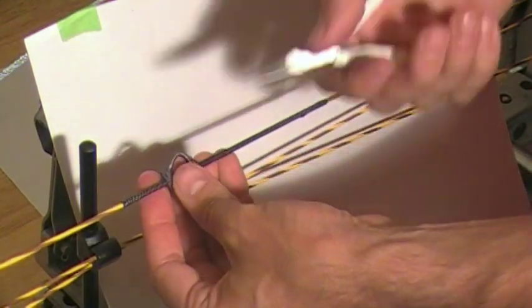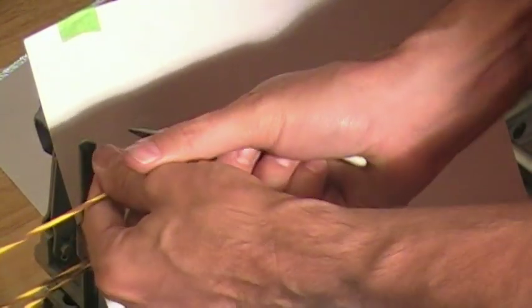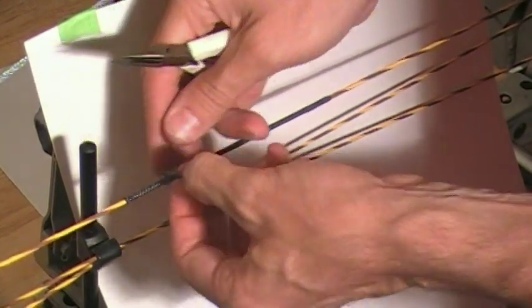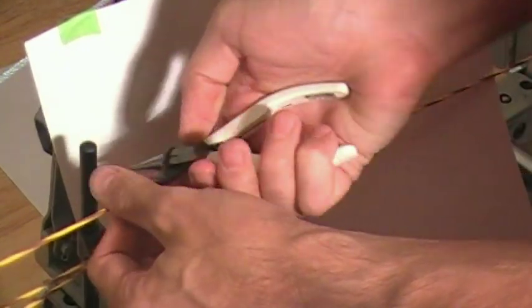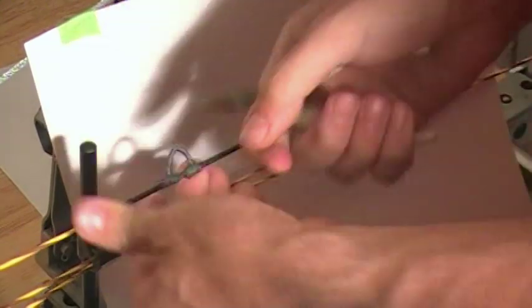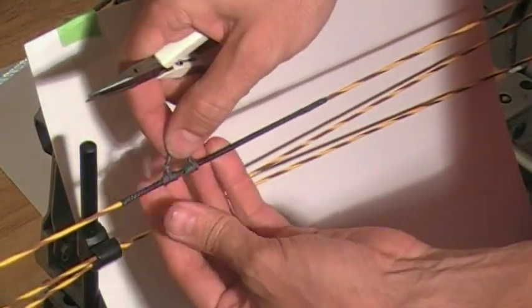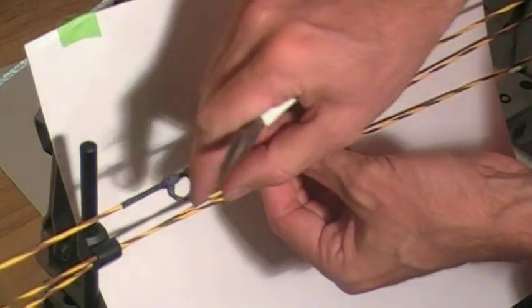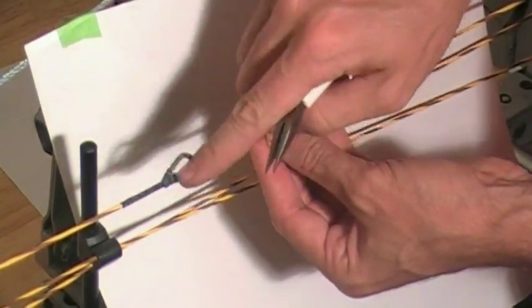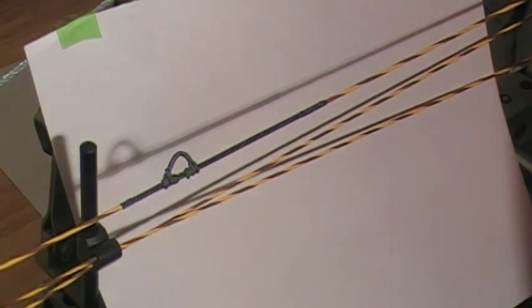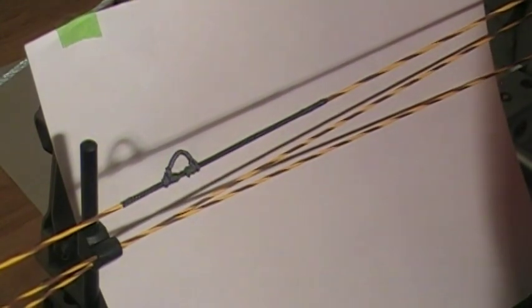Tension back on there. I can take a pliers or a screwdriver or something. Pull that tight, making sure all the strings wrap down around it. There we go. Just like a normal D loop, it'll rotate around the string.